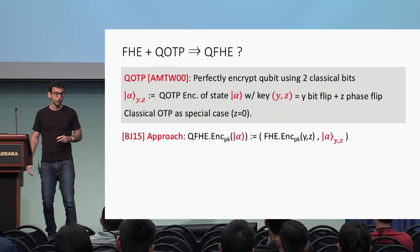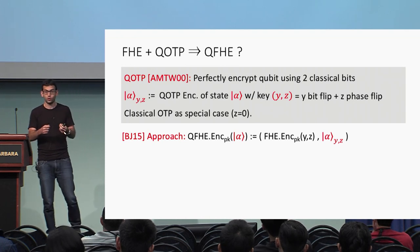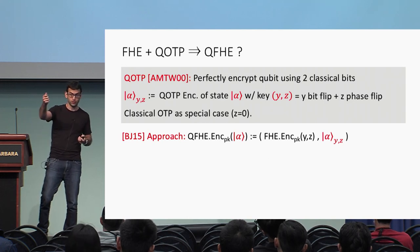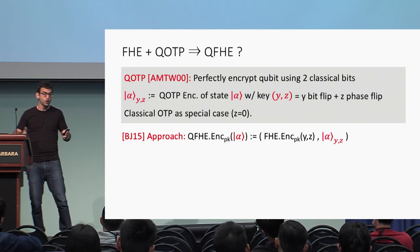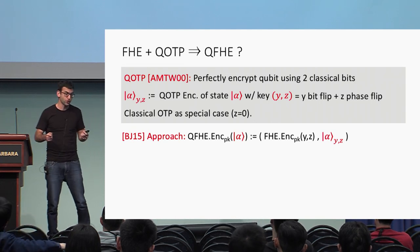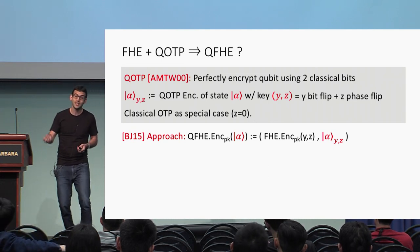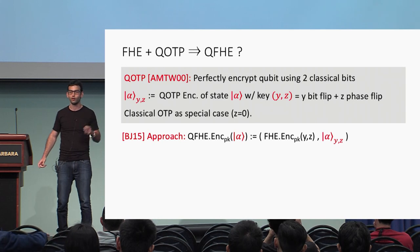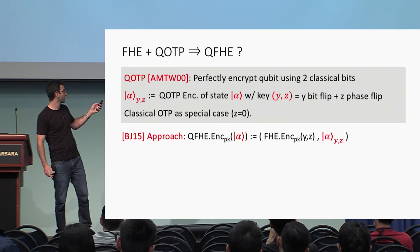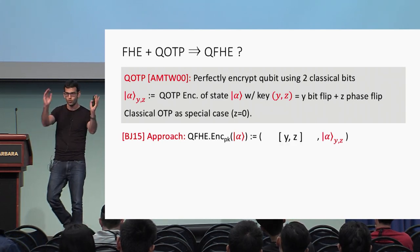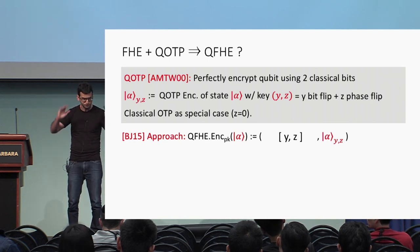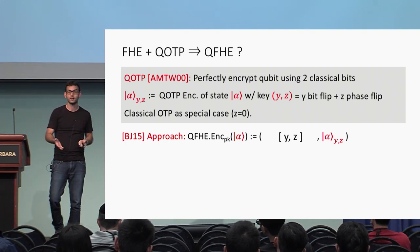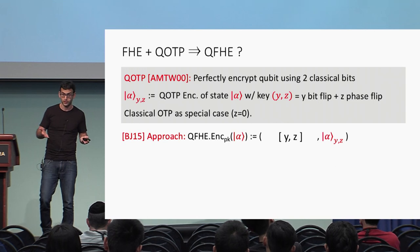The Broadbent-Jeffrey approach is as follows: to quantumly encrypt a quantum state, generate two classical bits y and z, use them to quantum one-time pad the register α, then use a classical encryption scheme to encrypt y and z. Things in brackets denote classical fully homomorphic encryption. This is a pretty cool idea even regardless of homomorphism — it shows you can get quantum public encryption from any classical public encryption scheme, and security follows pretty immediately by a hybrid argument.